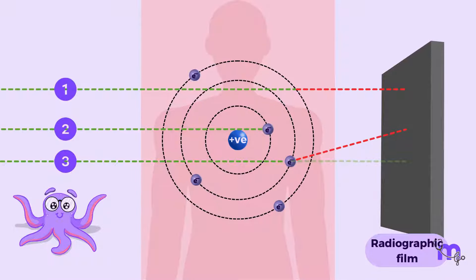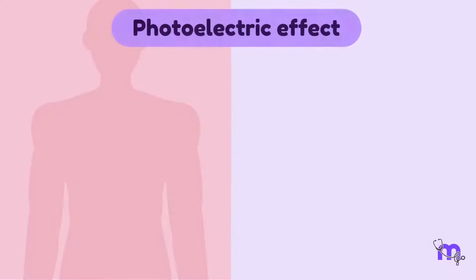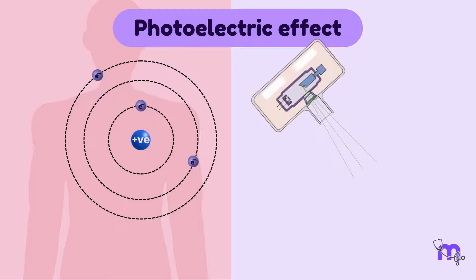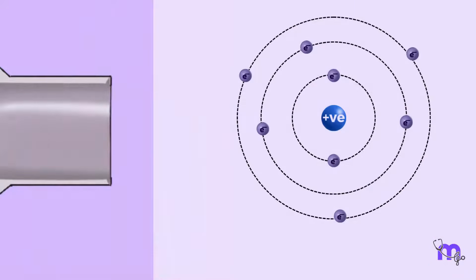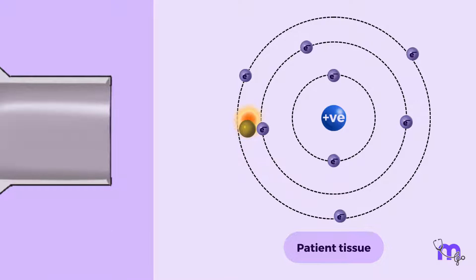Now let us discuss these interactions at the atomic level, beginning with the photoelectric effect. The photoelectric effect is basically what happens at the atomic level when X-ray photons are absorbed by the patient tissue. An incident X-ray photon collides with an electron of the tissue atom, depositing all of its kinetic energy into the electron. The incident photon then ceases to exist.